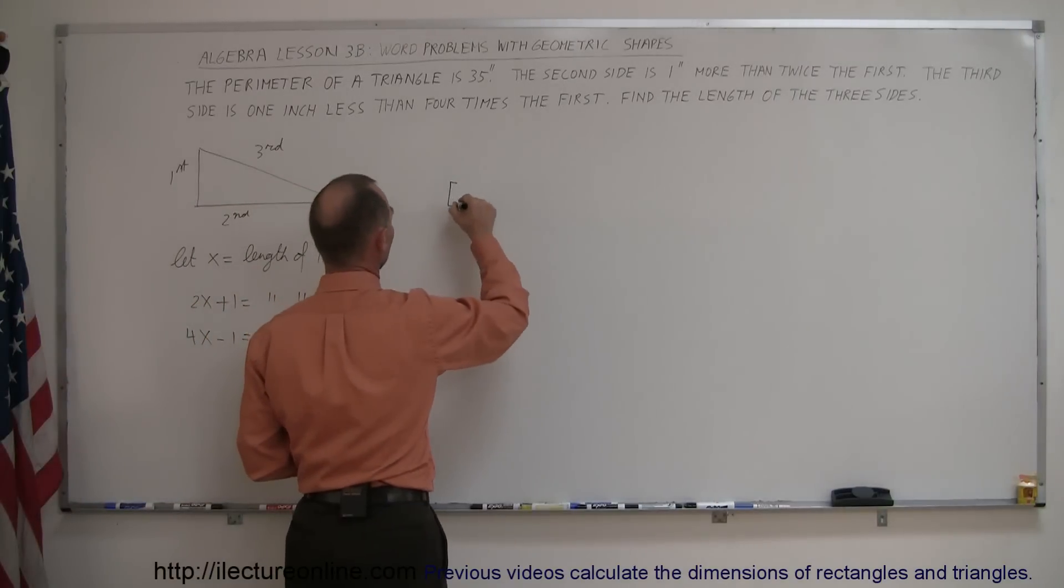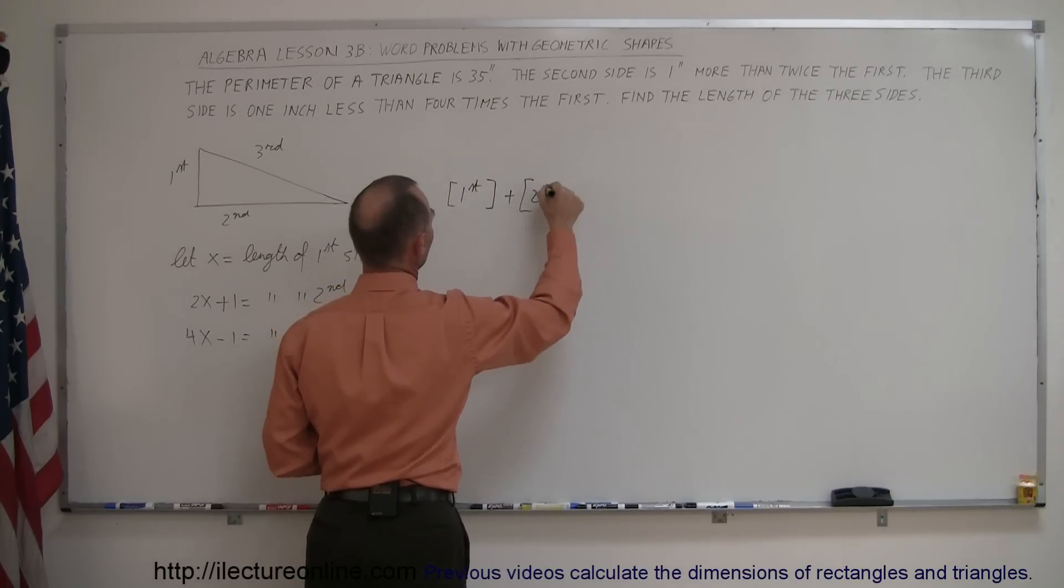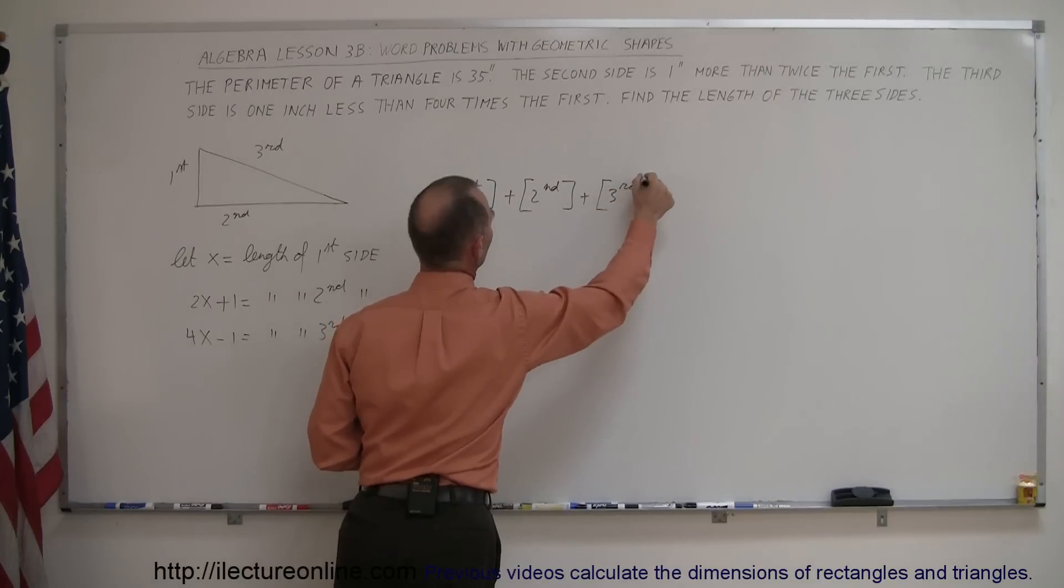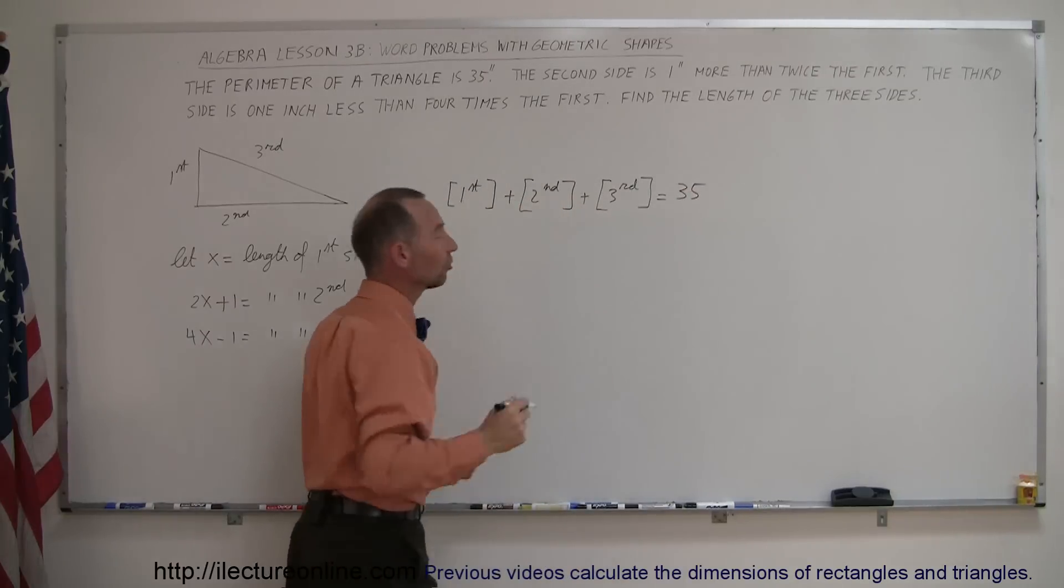That means the length of the first side plus the length of the second side plus the length of the third side equals the perimeter, or 35 inches.